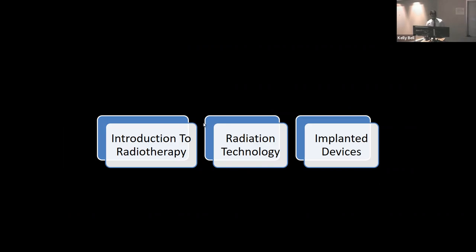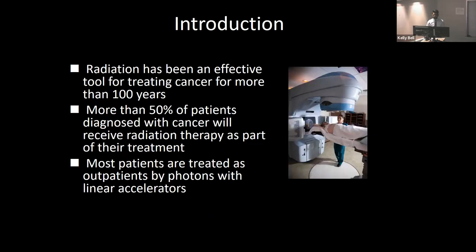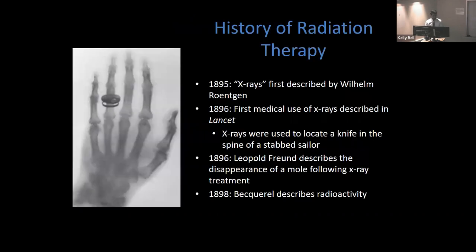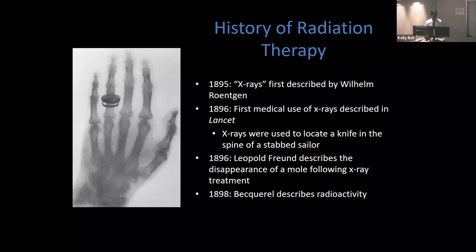Dr. Farouk: My role is to speak about radiation therapy in a general sense, as many here may not have had exposure to radiation medicine. Radiation has been an effective tool for treating cancer for over a hundred years, with about half of all cancer patients receiving radiation as part of treatment — most on a linear accelerator treated with photons. X-rays were described by Wilhelm Röntgen in 1895; first medical use was in the Lancet in 1896 to locate a knife in the spine of a stabbed sailor. First use to treat cancer was in 1896 when a mole disappeared following x-ray treatment. Radioactivity was described by Becquerel in 1898 — notably, penicillin wasn't discovered until 1928, so there's a long history of radiation medicine.